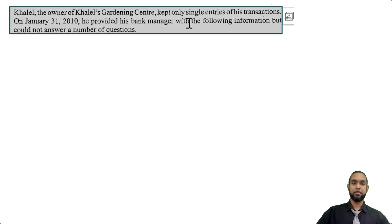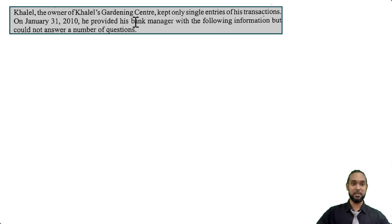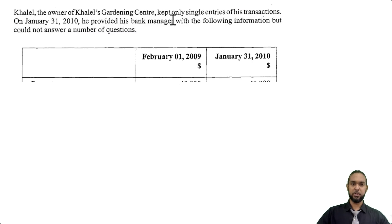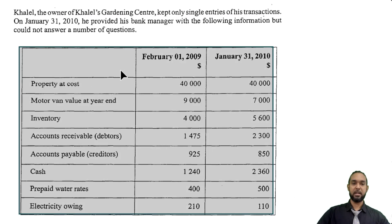We have a nice little opening paragraph here. It says Kalel, the owner of Kalel's Gardening Center, kept only single entries of his transactions. That means he doesn't use double entry, which could be a bit tricky when you're trying to prepare your final accounts and work out balances. On January 31, 2010, he provided his bank manager with the following information but couldn't answer some questions. We have a nice little table here with some opening and closing balances.